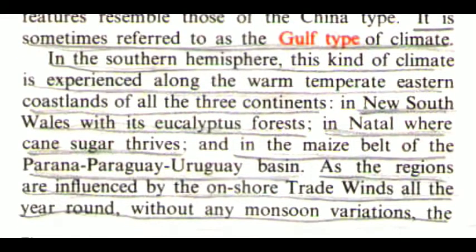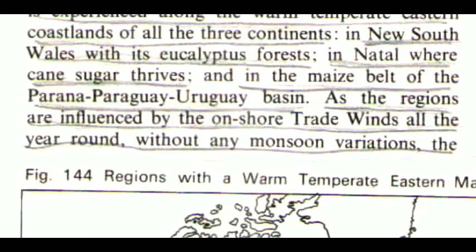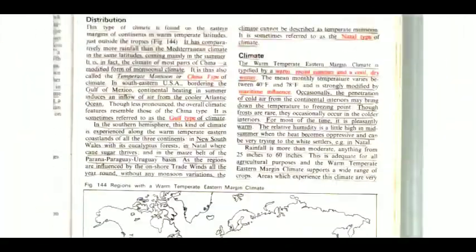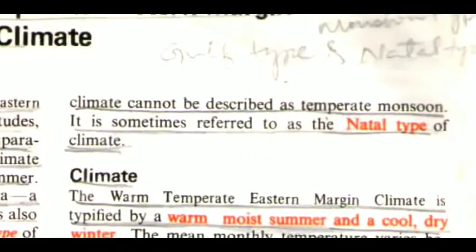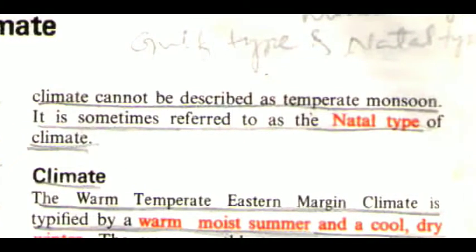In the southern hemisphere, this kind of climate is experienced along the warm temperate eastern coastlands of all the three continents — in New South Wales with its eucalyptus forests, in Natal where cane sugar thrives, and in the maize belt of the Parana, Paraguay, Uruguay basin. As the regions are influenced by the onshore trade winds all the year round, without any monsoon variations, the climate cannot be described as temperate monsoon. It is sometimes referred to as the Natal type of climate.